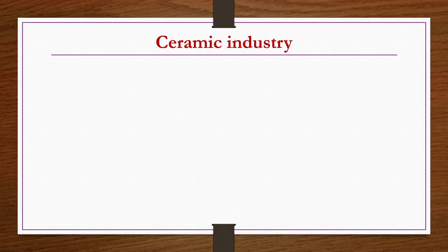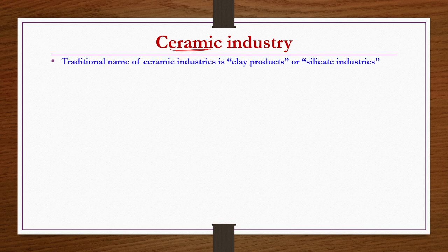Welcome to the MOOCs course in organic chemical technology. The title of today's lecture is Raw Materials and Basic Ceramic Chemistry. In this particular week, we are going to discuss about the ceramic industry. Most of the products of ceramic industries are some kind of clay wares or potteries, and because of that reason, the traditional name of ceramic industries is also 'clay products'.